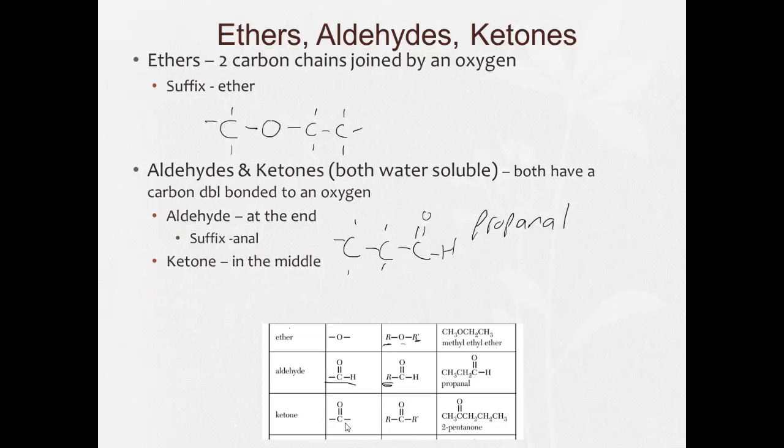And a ketone is going to have one of the other carbons in the middle double bonded to an oxygen. For them, the suffix is -one. In our example here, we can see that the second carbon is double bonded to the oxygen. This has five carbons, so it's pent, and since it's a ketone, it ends with -one: pentanone. Everything's built right into the reference table.